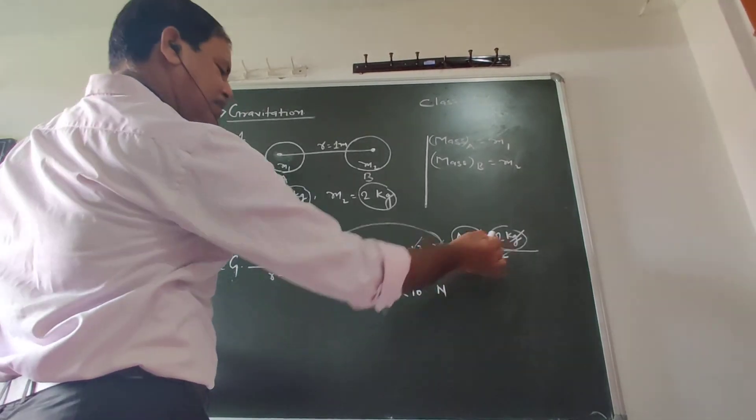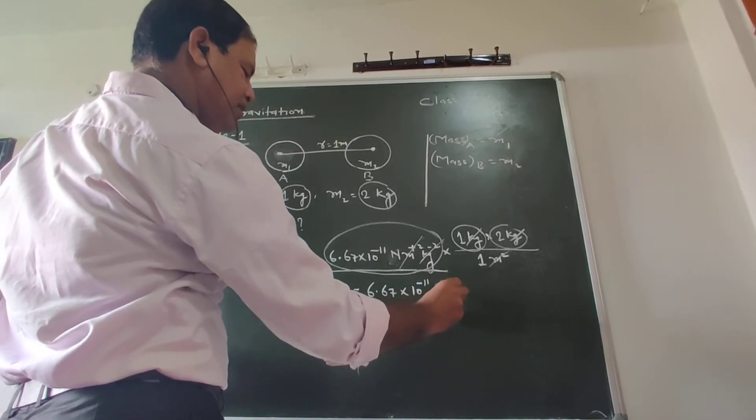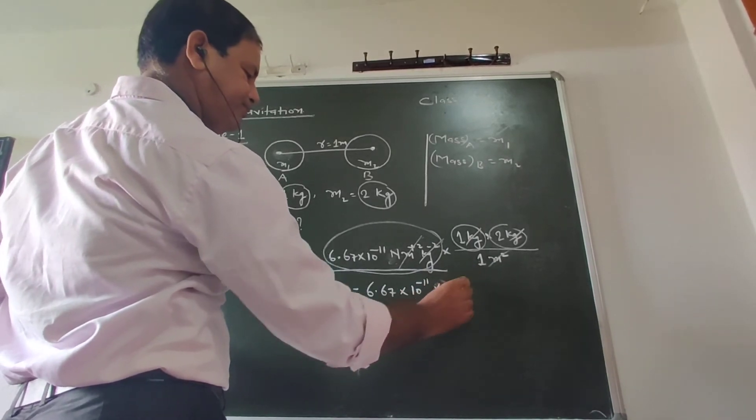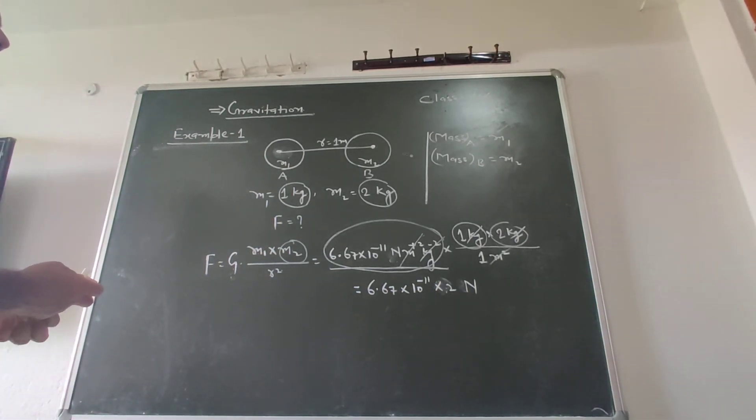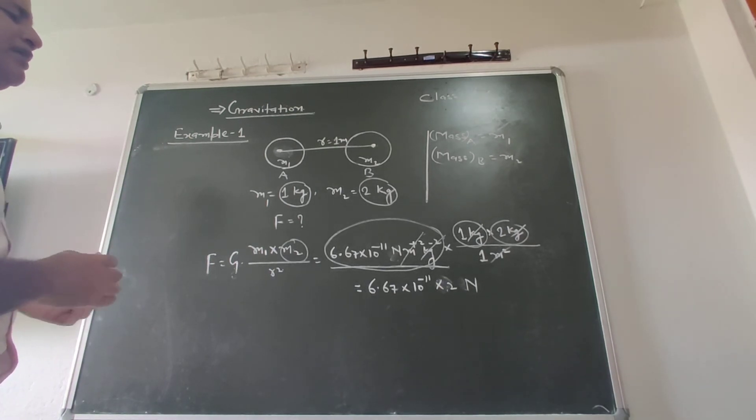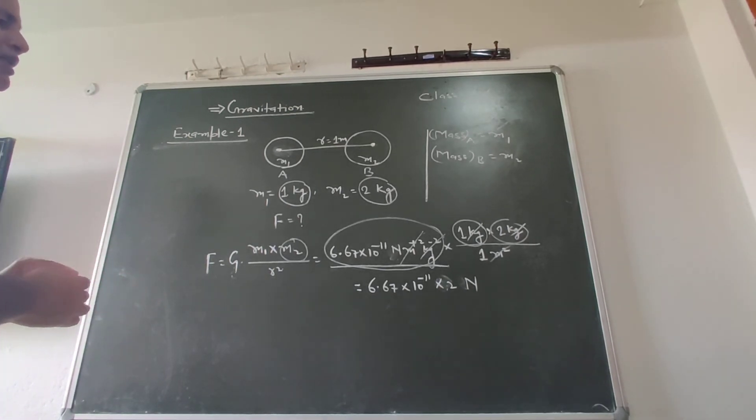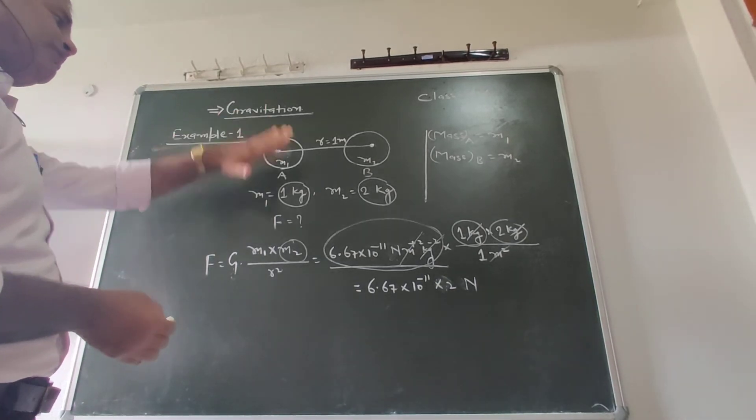If you have 2 here, you multiply 2 and it cancels. If you have two bodies A and B, with masses of 1 kg and 2 kg, separated by 1 meter, then the gravitational force will have this value according to the process.